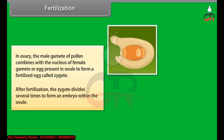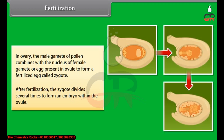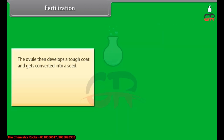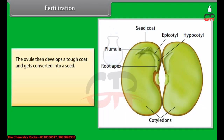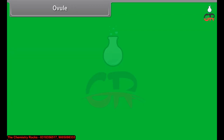After fertilization, the zygote divides several times to form an embryo within the ovule. The ovule then develops a tough coat and gets converted into a seed. The seed is the reproductive unit of a plant and contains a future embryo which develops into a seedling.